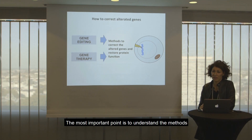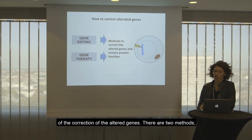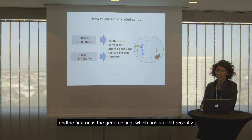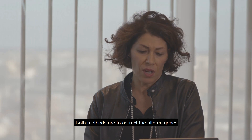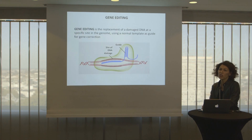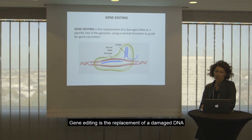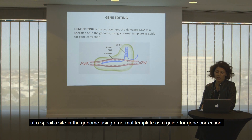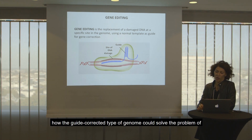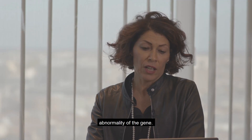The most important point is to understand the methods of correction of altered genes. There are two methods, and the second one — gene therapy — is the one usually used for both hemophilia A and B. We also have gene editing, which started more recently. Both methods aim to correct altered genes and restore protein function for factor VIII or factor IX. Gene editing is the replacement of damaged DNA at a specific site in the genome, using a normal template as a guide for gene correction, as clearly shown in this slide.